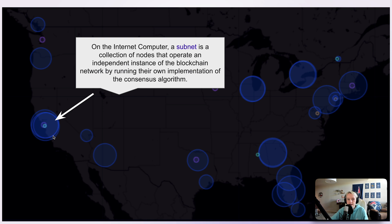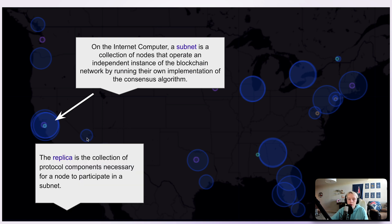So what is a subnet? A subnet is a collection of nodes that operate an independent instance of the blockchain network by running their own implementation of the consensus algorithm. When we're talking about subnets and nodes, we're also going to be talking about the replica, which is a collection of protocol components that are necessary for a node to participate in a subnet. The replica is software from the Internet Computer that a node downloads and runs in order to be part of a subnet and thus part of the Internet Computer.